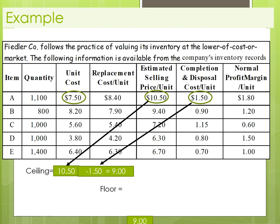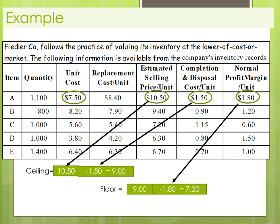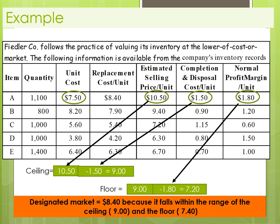Now we're going to do the floor, which is that nine dollars we just calculated minus the profit margin. So now we have our ceiling, which means that the replacement cost can't be higher than nine dollars or less than seven dollars and twenty cents. The designated market would be the $8.40 because it falls within the range of the ceiling of nine and the floor of $7.40. If the replacement cost had been higher than nine, we would have used nine dollars. If it had been lower than $7.20, we'd use the $7.20.